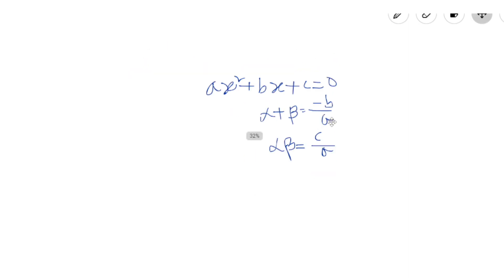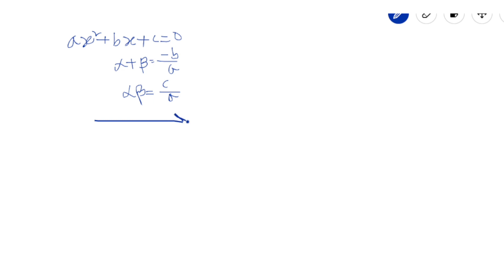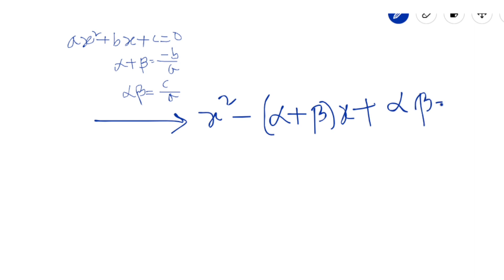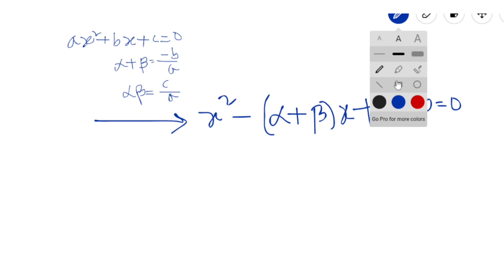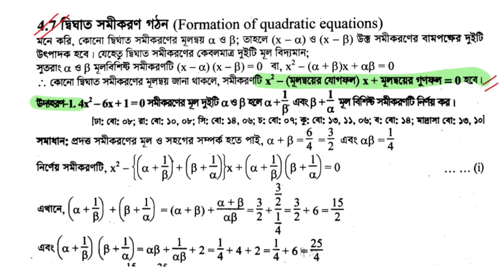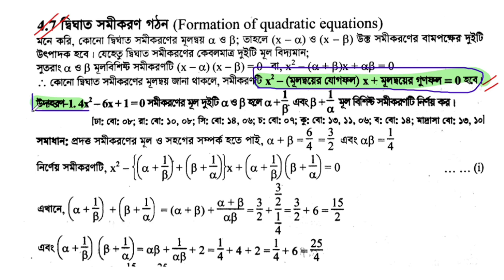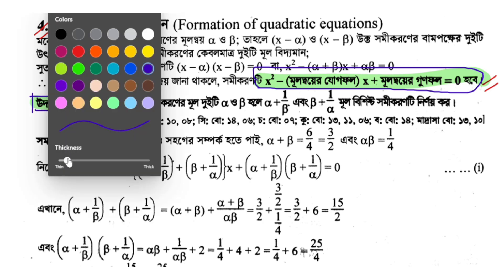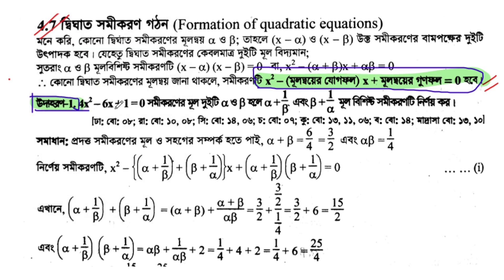We will now form a new equation. Given alpha plus beta and alpha times beta, we can write: x² - (alpha + beta)x + (alpha times beta) = 0. For example, the equation 4x² - 6x + 1 = 0 will be used as a working example to find alpha plus (1/beta) and beta plus (1/alpha).